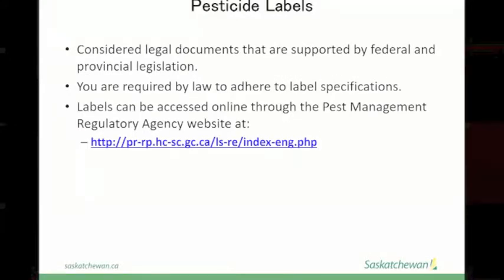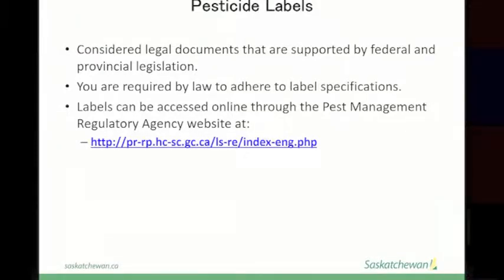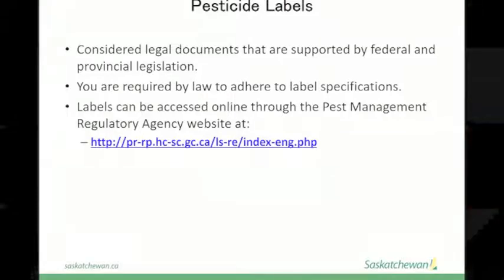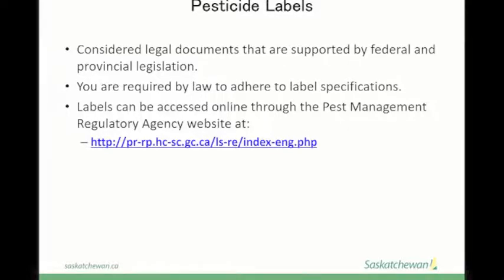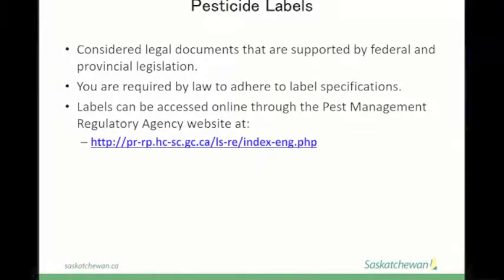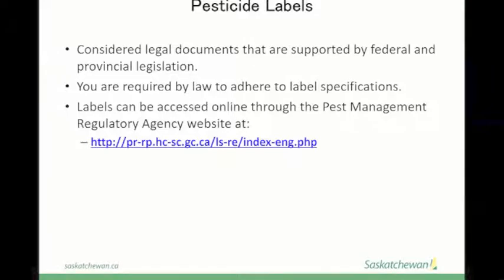Most of this information can also be found on the secondary panel of a pesticide label. Even though the information can be found in both places, you are still required to have a copy of both available to your employees. The federal government is responsible for pesticide labeling requirements. Pesticide labels are considered a legal document supported by federal and provincial legislation. When you purchase and use a pesticide, you are required by law to adhere to the label specifications. The ignorance of the law is not an excuse — every label says you must read it before using the product, so saying 'I didn't know' is not acceptable.